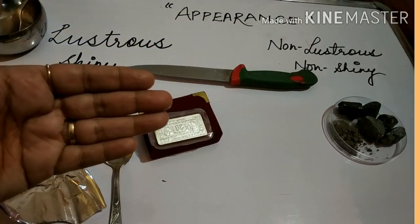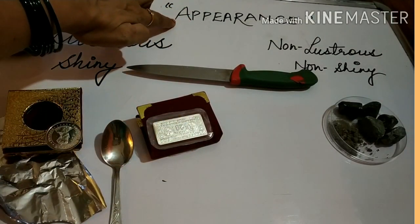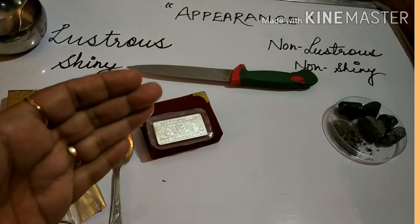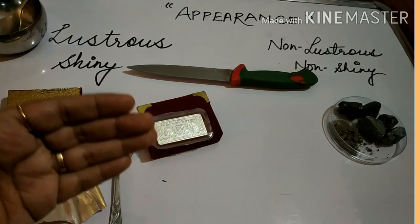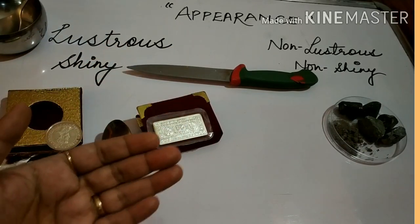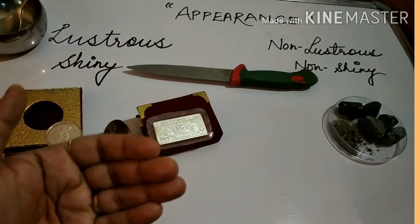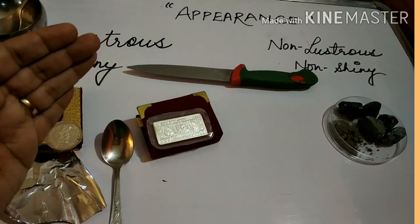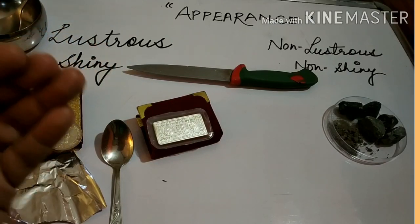Let's see the properties of material. The first property is called appearance. Appearance means 'dikhne mein' — how something looks. When we talk about appearance, we can see two things: either the thing is shiny or it is not shiny. If a thing is shiny, it is known as lustrous. Lustrous means 'chamakne wali'.